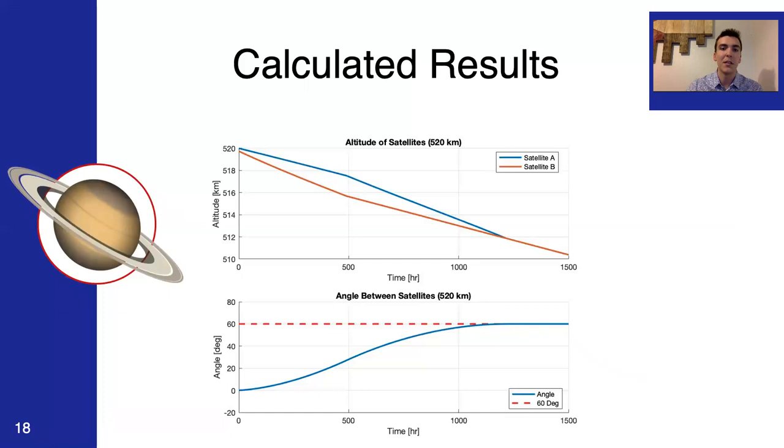The calculated results speak for themselves. Here you see the units associated with these maneuvers and you see that over a given period of time, it does taper off and reach a distance of 60 degrees apart between the two satellites. And this takes approximately 51 days.